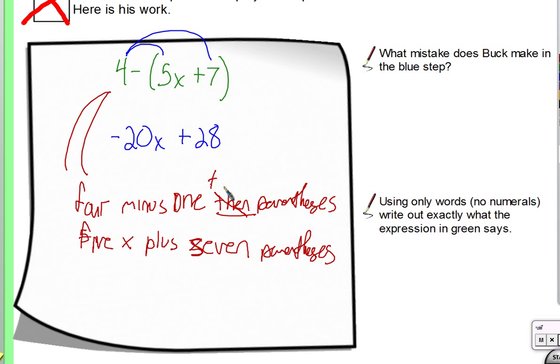So, this would be worth, right? 4 minus 1 times parentheses, 5x plus 7 parentheses. What do we think about that? Is that right? Yeah. Okay? So, if, though I want you to pay close attention to this question. Alright?